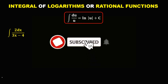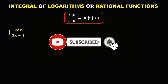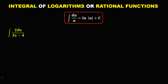Let's solve this problem. To find the integral of logarithms or rational functions using this formula, for this given, we first need to rewrite it. We just need to put the constant outside, so this becomes 2, then the integral of dx over 3x minus 4.